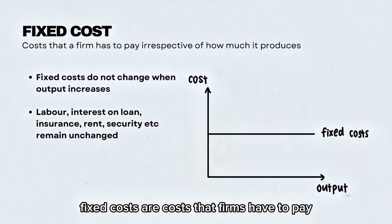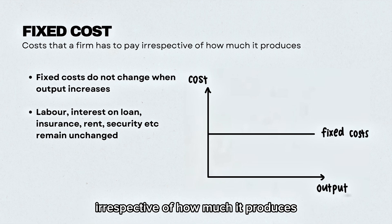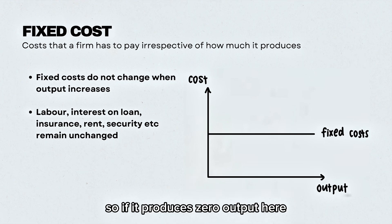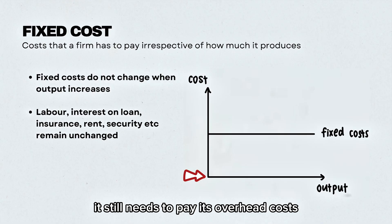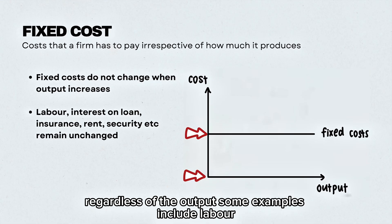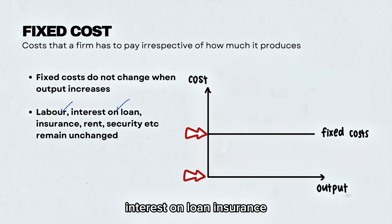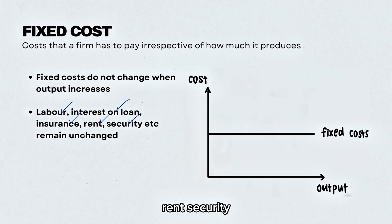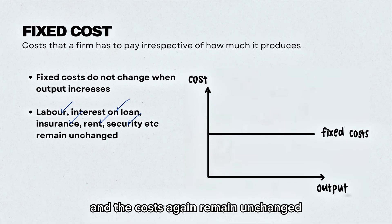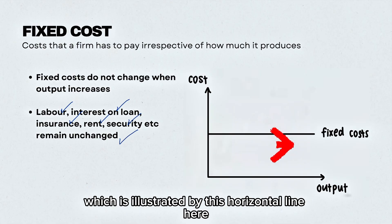Fixed costs are costs that firms have to pay irrespective of how much they produce. If it produces zero output, it still needs to pay its overhead costs regardless of the output. Some examples include labor, interest on loans, insurance, rent, security, etc. And the costs remain unchanged, which is illustrated by this horizontal line here.